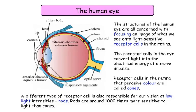The structure of the human eye is all concerned with focusing an image onto light-sensitive receptor cells in the retina. The receptor cells convert light energy into the electrical energy of a nerve impulse. The receptor cells that perceive color are called cones — C for color, C for cones. A different type of receptor cell is responsible for vision at low light intensities.